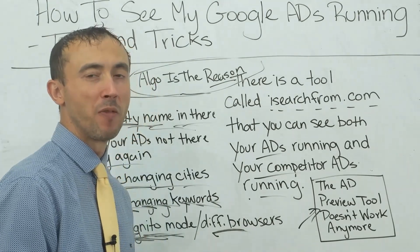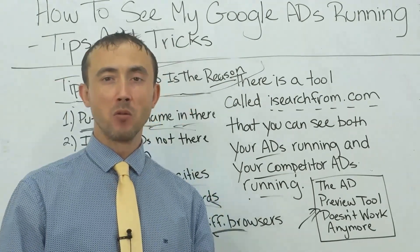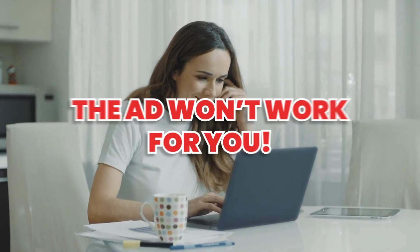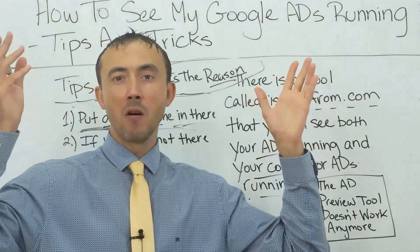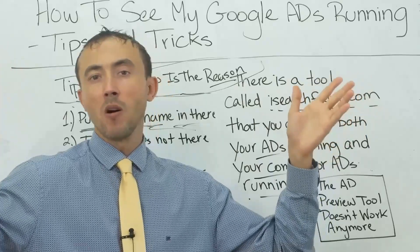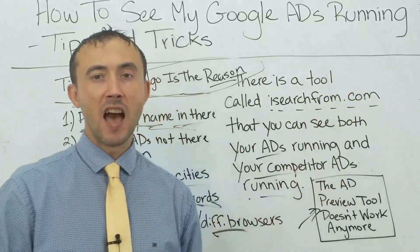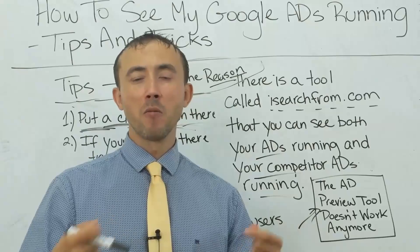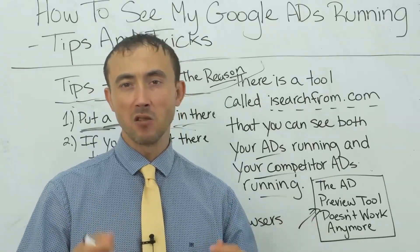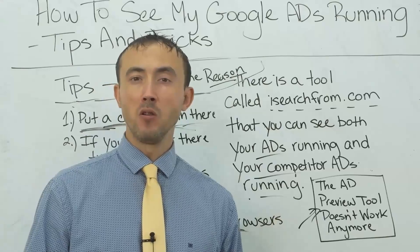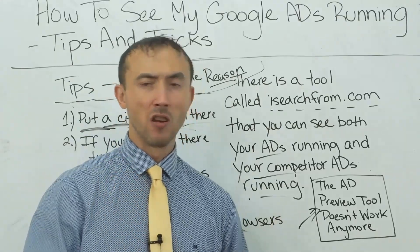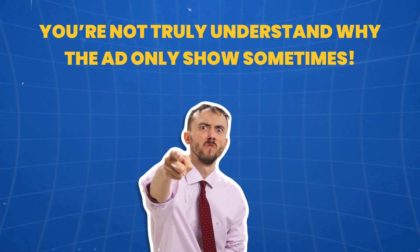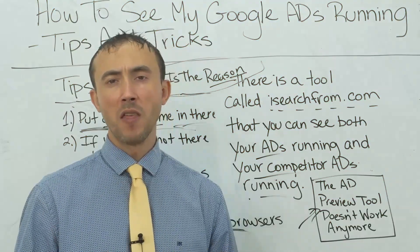Finally, you can use incognito mode on your browser or switch to a different browser — and this actually helps a lot. Because of the algorithm, if you're on Google Chrome with a certain profile, the ad might not show for you. Whereas on a different browser, the algorithm suddenly figures out you're the best prospect in the world for that ad. Until you understand that all of this is algorithmically driven — just like a Facebook newsfeed is algorithmically driven, deciding in real time what you should see — you're not going to truly understand why the ad only shows sometimes.